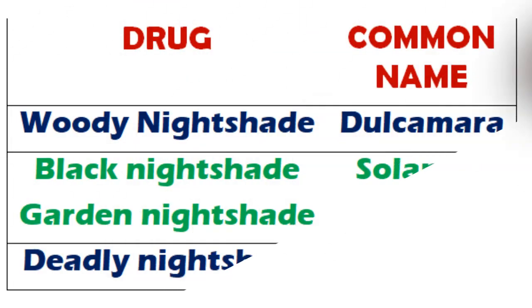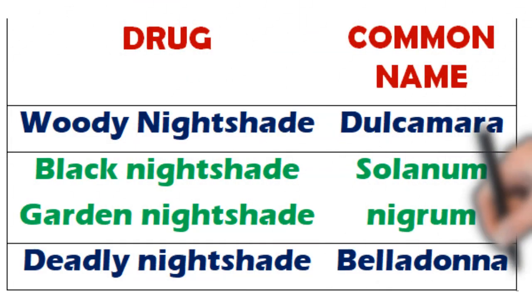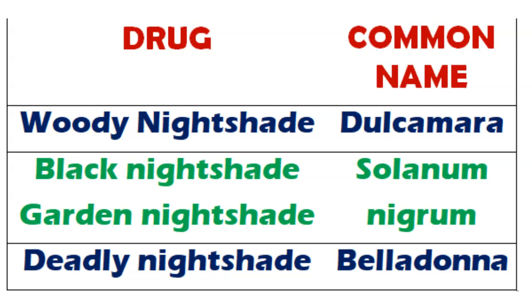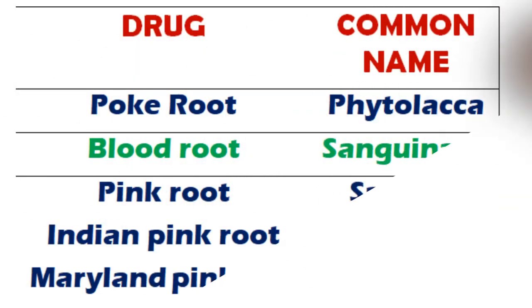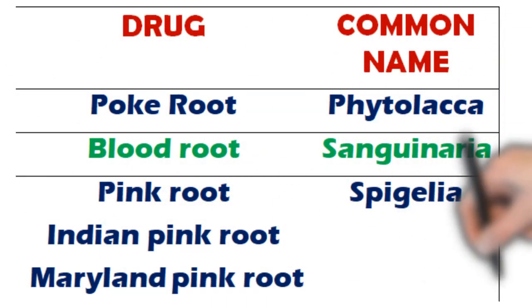Now coming to another similar group: woody nightshade is the common name of Dulcamara. Black nightshade and garden nightshade are the common names of Solanum nigrum. Deadly nightshade is the common name of Belladonna.